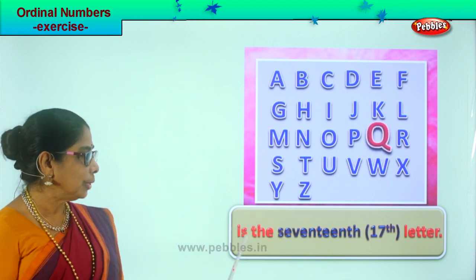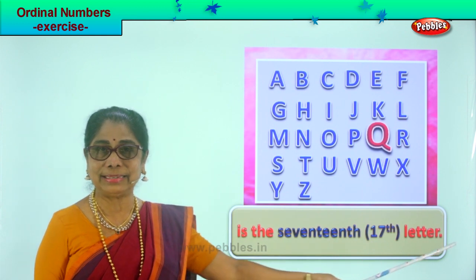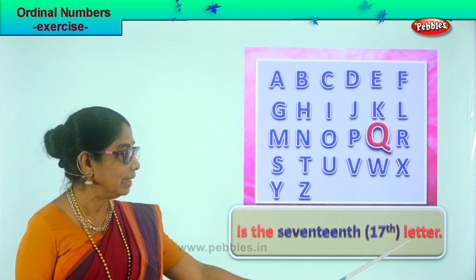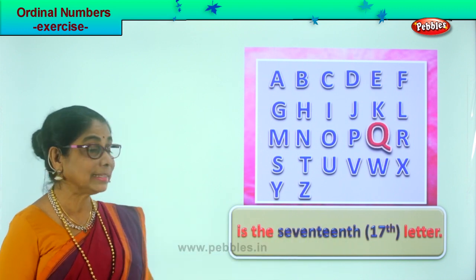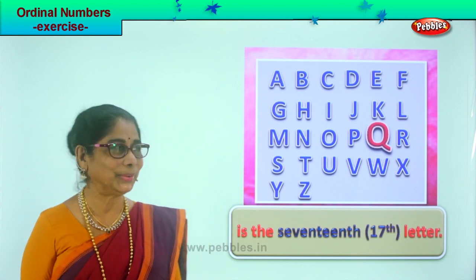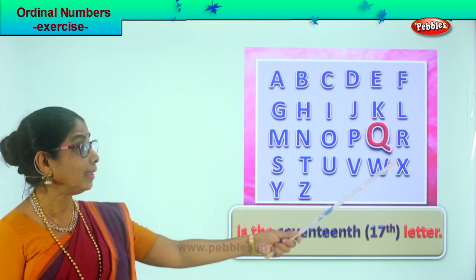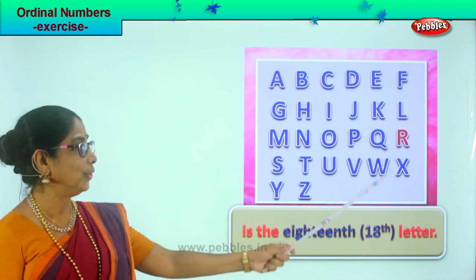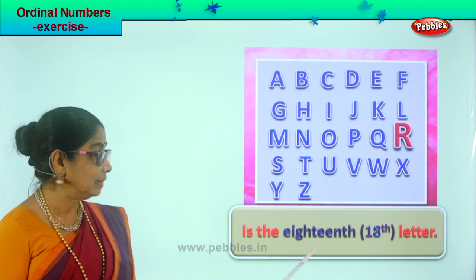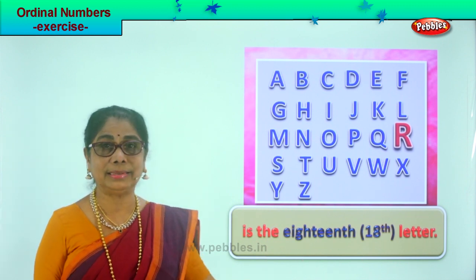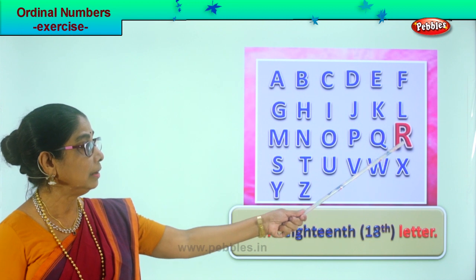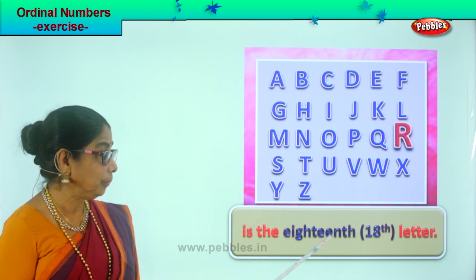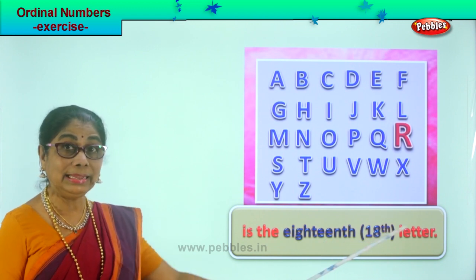Q is the seventeenth letter. Put seventeen and TH — seventeenth letter. After Q comes R. R is the eighteenth letter. Eighteen and TH — eighteenth letter.